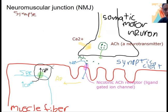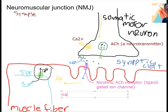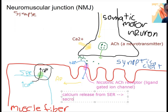This is the result of our action potential in the muscle cell. In the next video we'll cover coupling this excitation with contraction. Here we leave off with calcium release from the sarcoplasmic reticulum into the sarcoplasm to initiate muscle contraction.